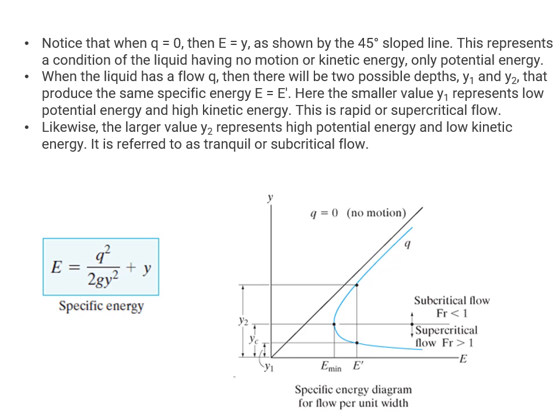The smaller value Y1 represents low potential energy and high kinetic energy — this is supercritical flow. The larger value Y2 represents high potential energy and low kinetic energy, and is referred to as tranquil or subcritical flow.